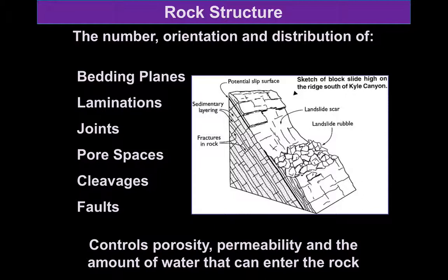So it's crucial as geologists that we understand how many of these discontinuities there are, their distribution through the rock, and also their orientation — which way are these aligned?